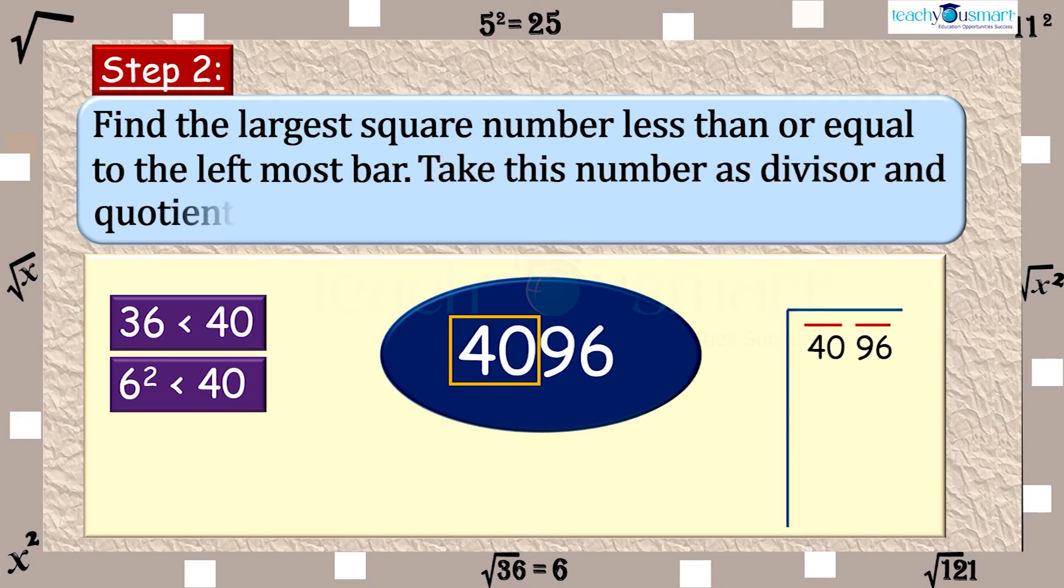Here we take 6 as the quotient and 6 as the divisor. Now subtract 36 from 40 and get the remainder 4.